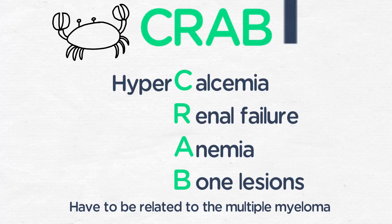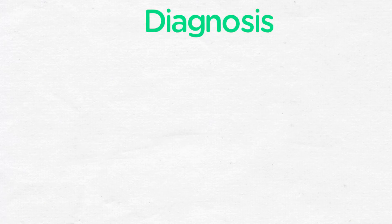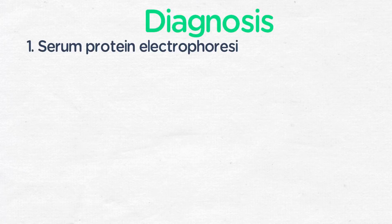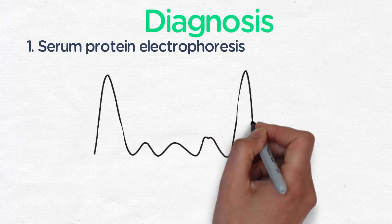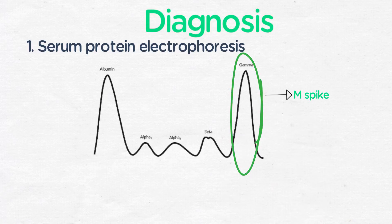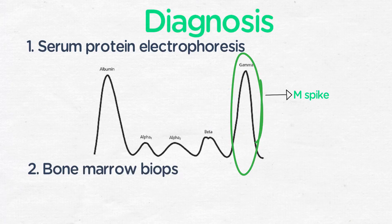There are some patients who would not be secreting a monoclonal protein, and these would be non-secretory myeloma. If a patient comes in with anemia or bone pain, and you look for a monoclonal protein and do a serum protein electrophoresis and find an M-spike, which is the clonal protein, then you start thinking of multiple myeloma, and we do a bone marrow biopsy.